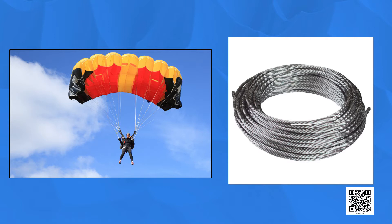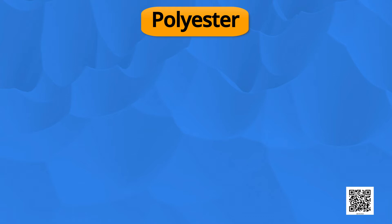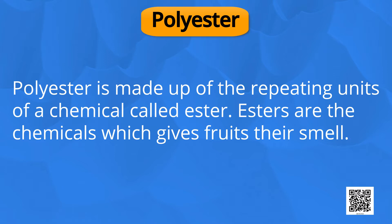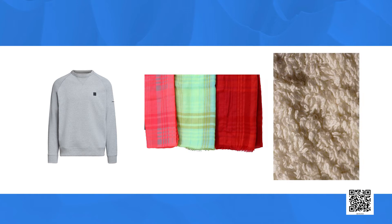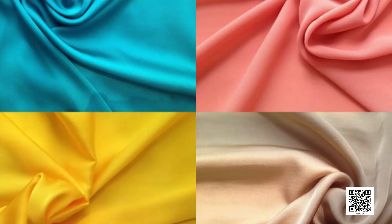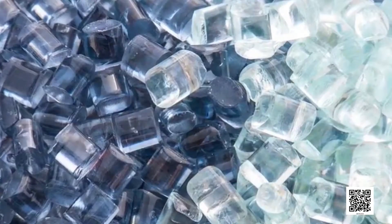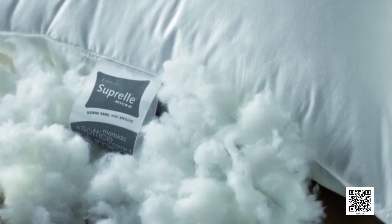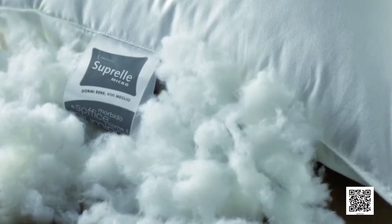Now we shall learn about the third type of synthetic fiber: polyester. Polyester is made up of repeating units of a chemical called ester. Esters are the chemicals which give fruits their smell. Fabrics are sold by names like polycott, polywool and terricot. Polycott is prepared by mixing polyester and cotton, and polywool is a mixture of polyester and wool. The fabric does not get wrinkled easily and is easy to wash. Terylene is a popular polyester made by mixing wool and cotton and is used in the fabric industry for making sarees and other clothes.